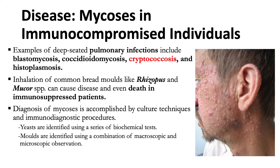Inhalation of common bread molds like Rhizopus and Mucor species can cause disease and even death in immunocompromised patients. The diagnosis of mycosis is accomplished by culture techniques and immunodiagnostic procedures. For yeast, identification uses a series of biochemical tests; for molds, identification uses a combination of macroscopic and microscopic observations.